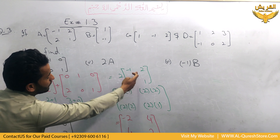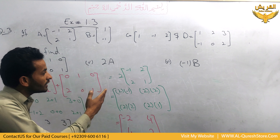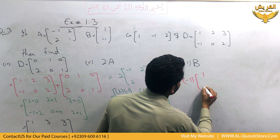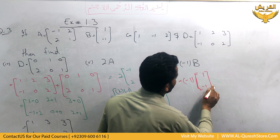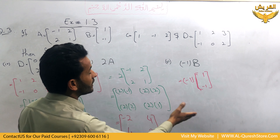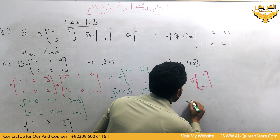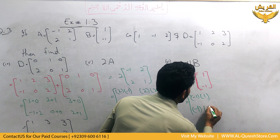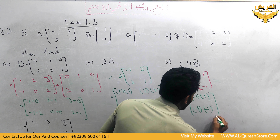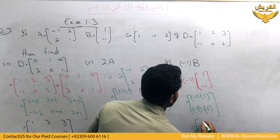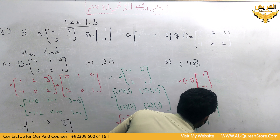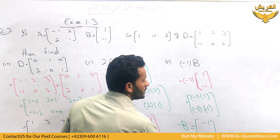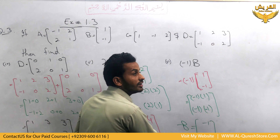Now we multiply minus 1 with matrix B. Matrix B has elements 1 and minus 1. We multiply each element with minus 1 to find minus B — the additive inverse of B. So: minus 1 multiplied by 1 becomes minus 1, and minus 1 multiplied by minus 1 becomes plus 1. By multiplying with minus 1, we can find the additive inverse of any matrix.